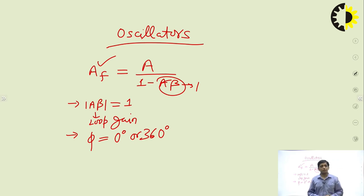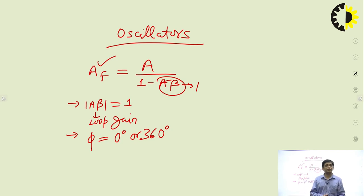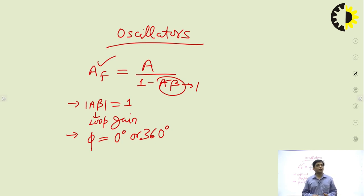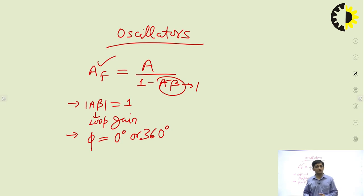The second condition is that the total phase shift around the loop should be 0 degrees or 360 degrees — that is the mandatory requirement for oscillations. When the total phase shift is 0 or 360 degrees, both signals will be in phase, and in positive feedback, two signals are added. The output signal goes to the feedback network and is added to the input signal. Two signals can only be added if they are in phase.